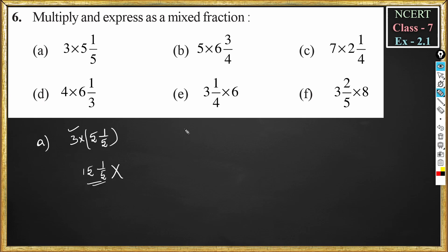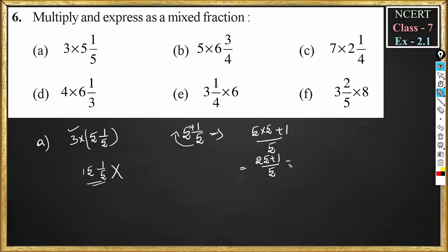To convert 5¹/₅ into an improper fraction, we multiply 5 with the denominator 5 and add the numerator 1. That means 5 × 5 + 1, divided by 5. So this becomes 25 + 1 by 5, which is equal to 26/5.